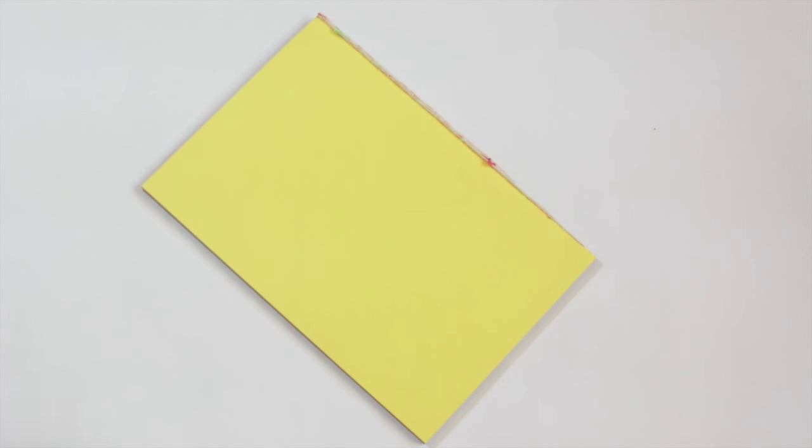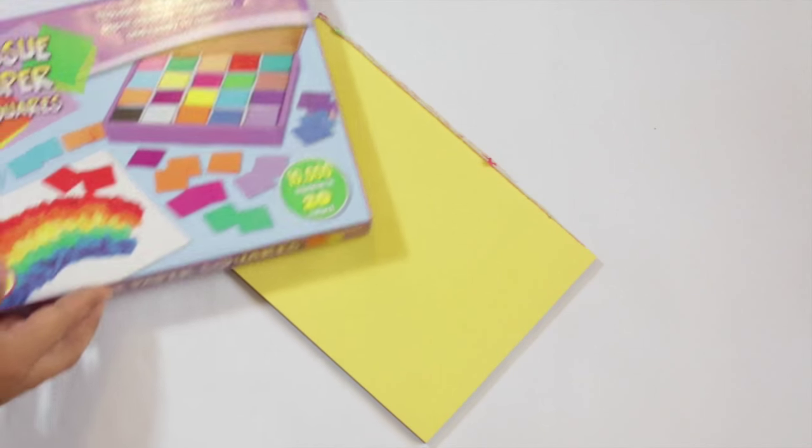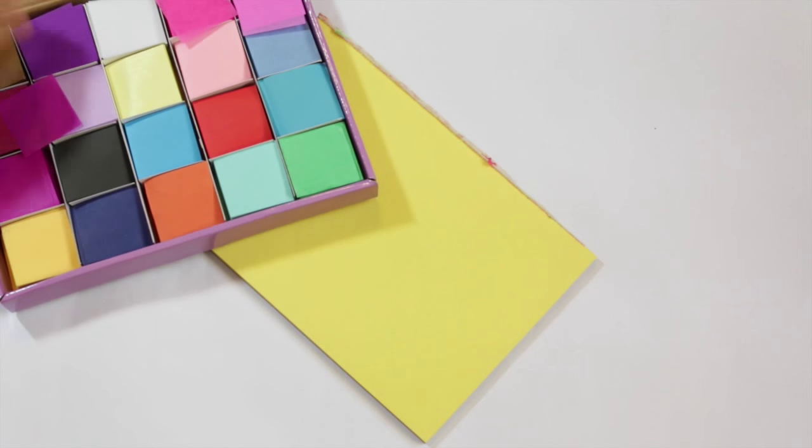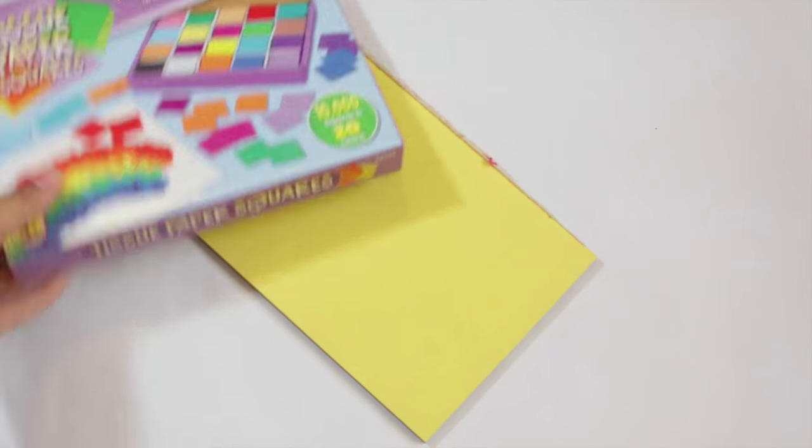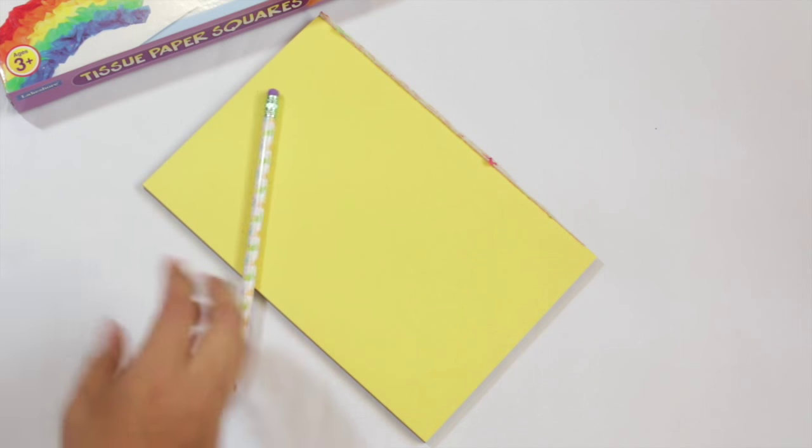So if you have some paper, heavy cardstock, I'm using construction paper here. Some tissue paper. I have these tissue paper squares from Lakeshore Learning. I just had them on hand because I like that they were pre-cut. And they're pretty affordable when you use a coupon or find them on sale. A pencil and some school glue.